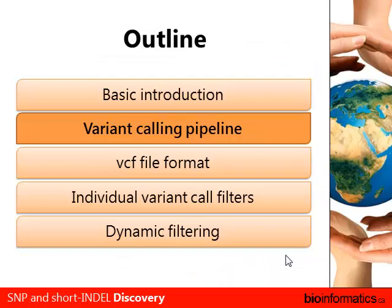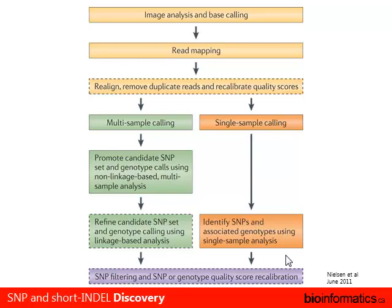Now let's talk about the variant calling pipeline. From the Nielsen 2011 paper, the first three steps cover what we discussed about alignment: base calling, read mapping, duplicate removal, indel realignment, and base quality recalibration. From there, two distinct workflows exist depending on whether you're doing population-level variant calling or single-individual variant calling. Common to both at the end is refining and filtering your variant calls, and even genotype quality score recalibration.